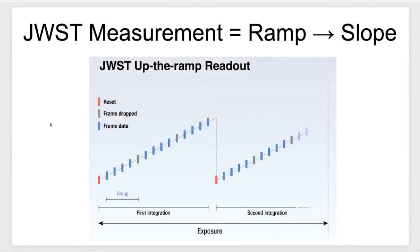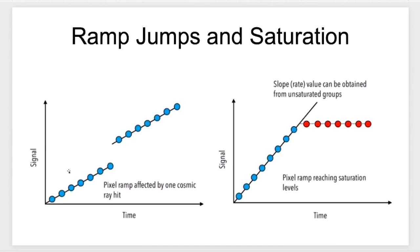Let me give a little graphic about what the JWST data actually looks like and what the stage one pipeline does. When you get your data, each of the individual reads gets grouped into combined groups — this happens on board the spacecraft. When you put your APT files together, you can tell it how many frames you want per group, and on board all the different frames or reads get averaged into single groups. A given integration will consist of one or more of these groups, and a given exposure can be one or more integrations.